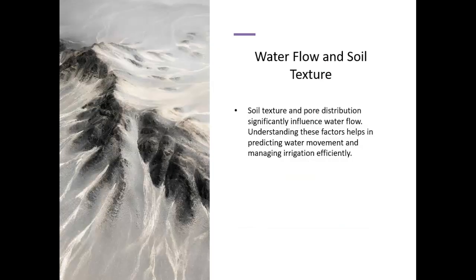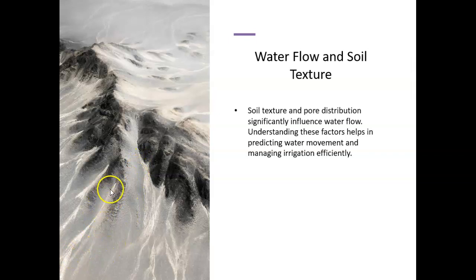As we look at this picture, think about the forces that are influencing water that lands on this mountain. The water is going to land on the mountain and it's either going to go into the soil or it's going to run off. We can see evidence of water running off in great amounts because of many things having an influence on soil water, including gravity, the soil water potential, matrix potential, osmotic potential, and gravitational potential — all playing a role on this particular soil surface.